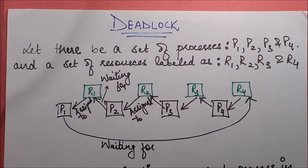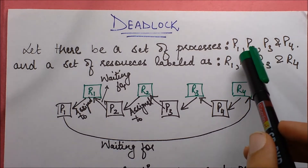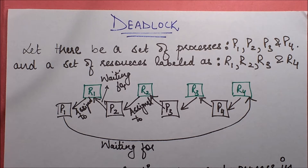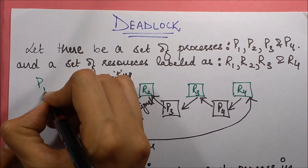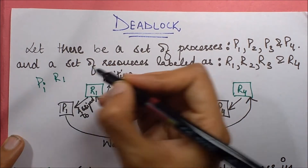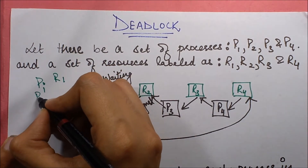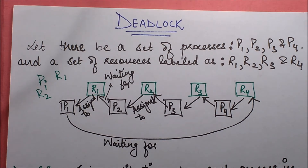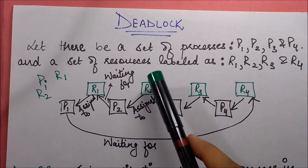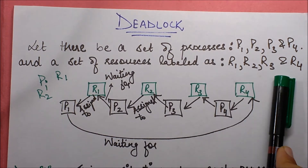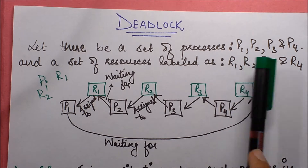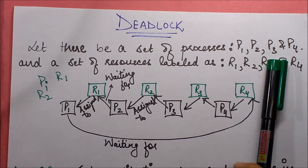Imagine a scenario where you have a set of processes — let's name them P1, P2, P3, P4 — and you also have a certain set of resources. Processes need some resources and may also have resources already assigned to them. For example, a process Pi may need resource R1 and already have resource R2. So you have resources R1, R2, R3, R4 and processes P1, P2, P3, P4.